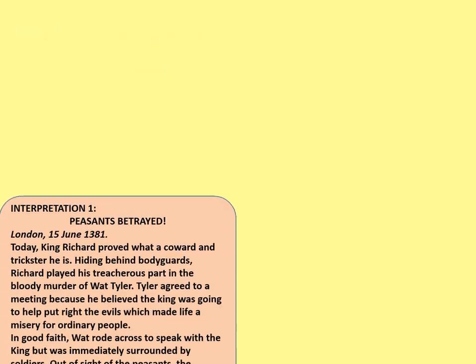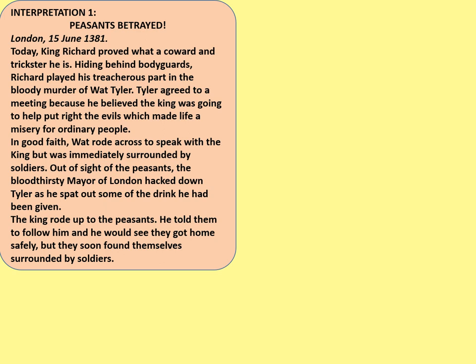Both interpretations have their own particular slant or bias. Interpretation one: 'Peasants Betrayed. London, 15th of June, 1381. Today, King Richard proved what a coward and trickster he is. Hiding behind bodyguards, Richard played his treacherous part in the bloody murder of Wat Tyler. Tyler agreed to a meeting because he believed the king was going to help put right the evils which made life a misery for ordinary people. In good faith, Wat rode across to speak with the king but was immediately surrounded by soldiers. Out of sight of the peasants, the bloodthirsty mayor of London hacked down Tyler as he spat out some of the drink he had been given. The king rode up to the peasants and told them to follow him and he would see that they got home safely, but they soon found themselves surrounded by soldiers.' Which side does that one particularly seem to favour?